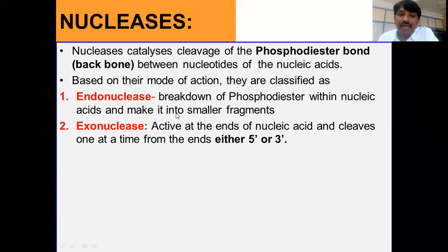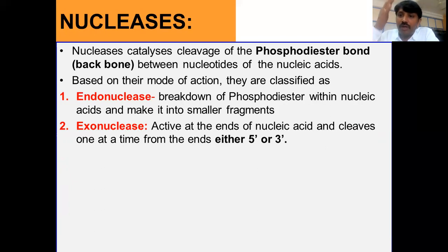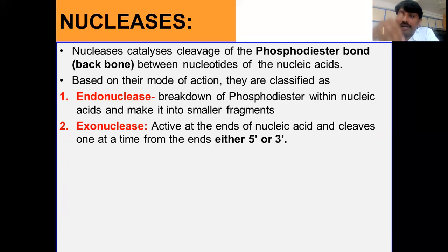Endonucleases break down the phosphodiester bond within the nucleic acid and make it into smaller fragments. What they do is start the cleavage from sites within the nucleic acid — they do not require a free end to initiate cleavage.